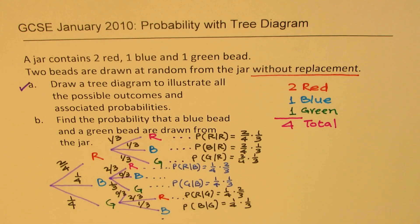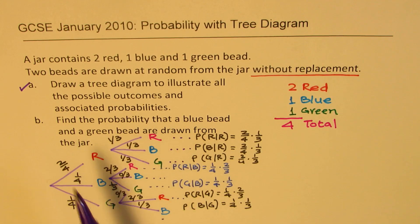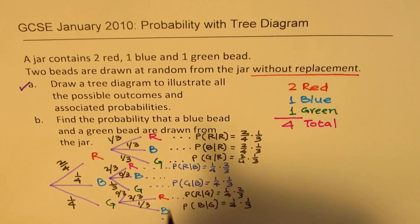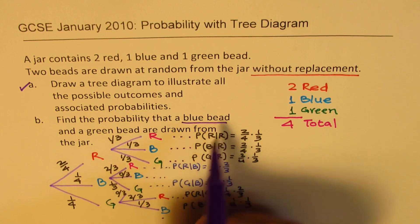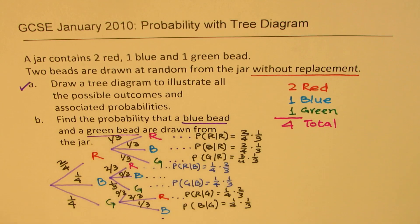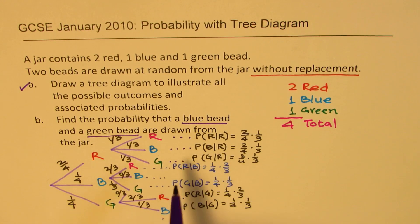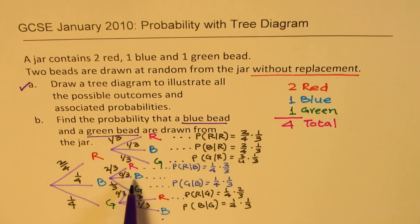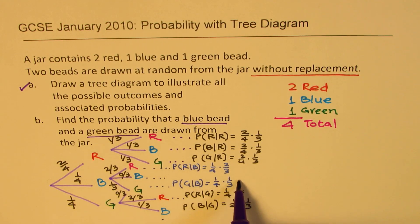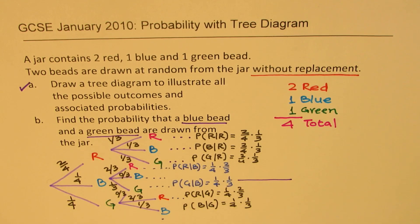Now let's look into what they are asking for part b. Find the probability that a blue bead and a green bead are drawn. So we want blue and green - either one could be first or second. In these combinations, wherever we have blue and green, we'll forget about the red line. Blue and green, we get this one. Or we could get green first and then blue - these two.